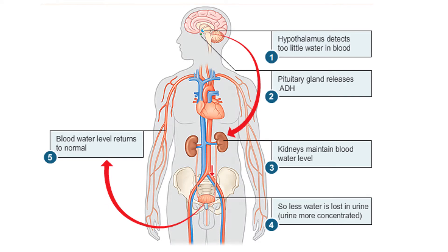This diagram here shows what happens if we have too little water in our blood. If your blood is not watery enough — you haven't had a drink for a long time — this is detected by cells in the hypothalamus, which sits just underneath your brain. It sends a message to the pituitary gland saying release ADH. ADH stands for antidiuretic hormone. A diuretic is a drug that makes you produce lots of dilute urine, so an antidiuretic does the exact opposite — it sends a message to the kidneys telling them to reabsorb as much water as possible, rather than passing it as urine. If you have too much water in your blood, the body stops secreting ADH and you get the opposite effect.